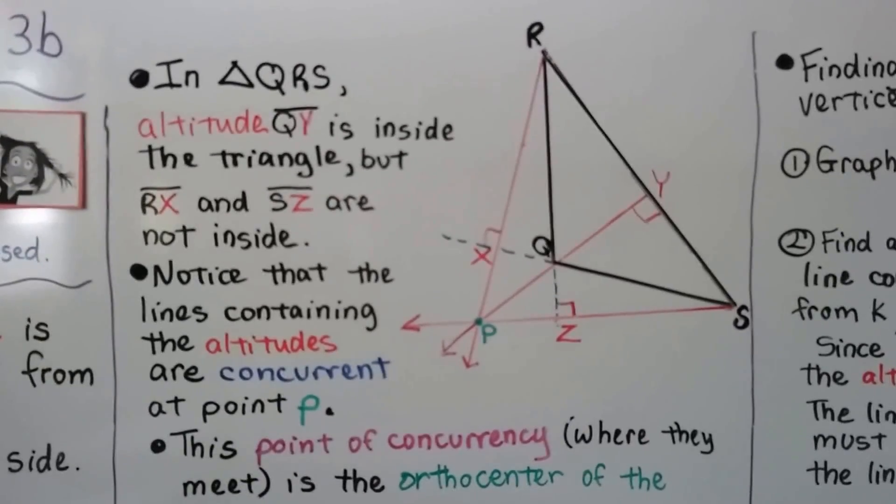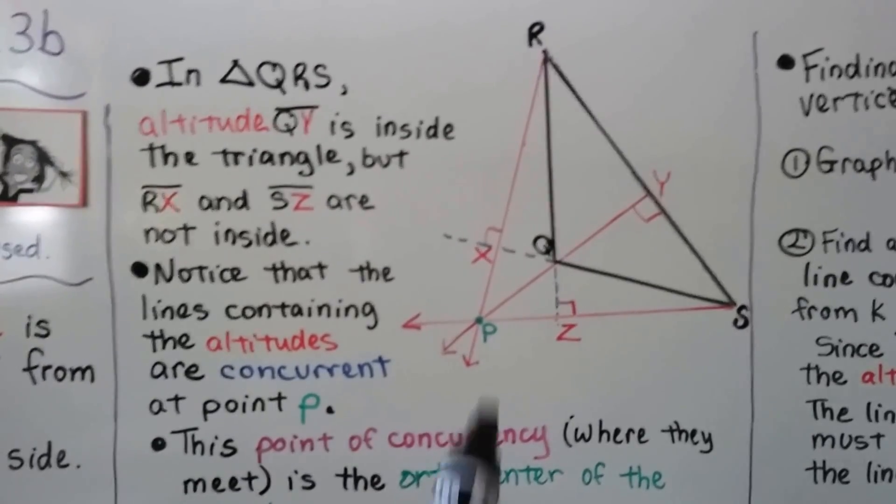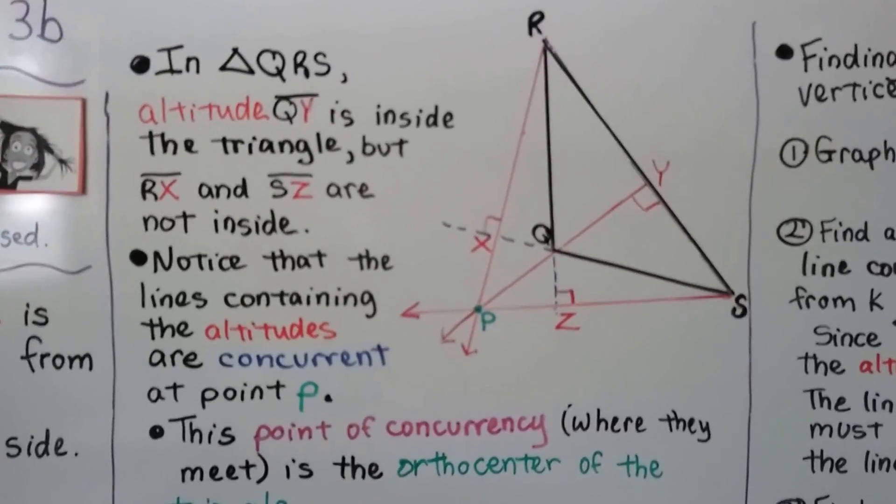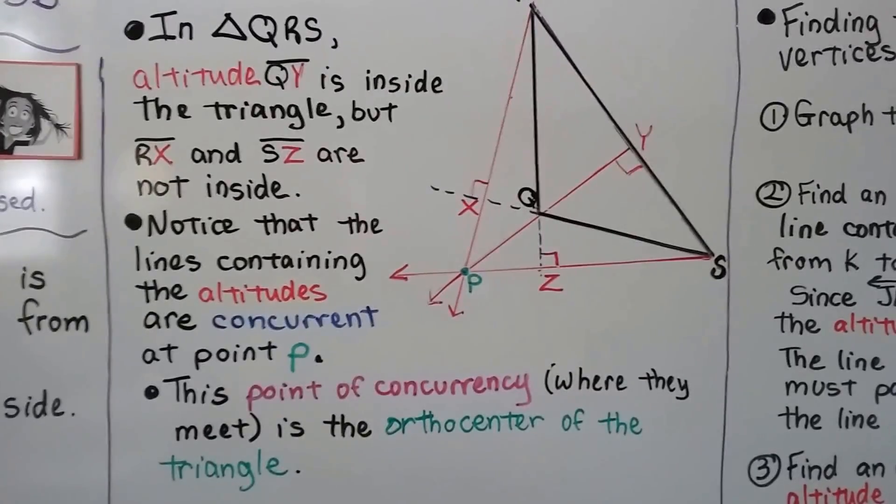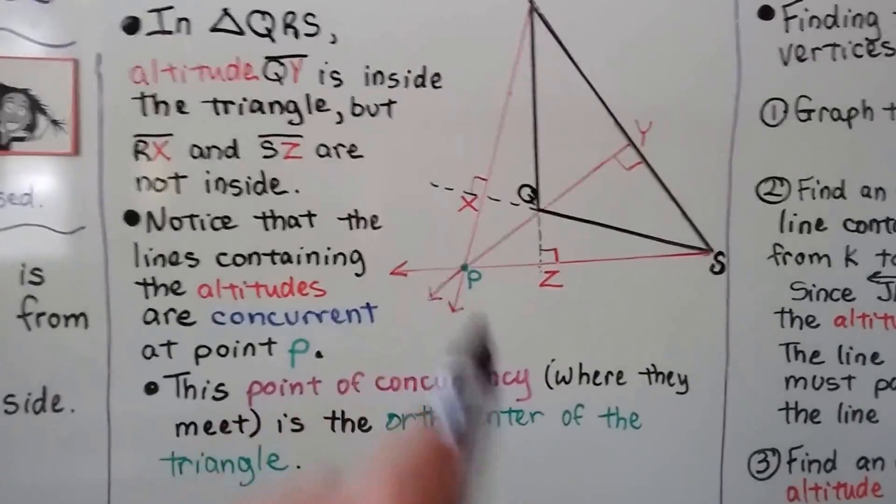And notice that the lines containing the altitudes are concurrent at point P. They meet up at point P. And this point of concurrency, where they meet, is the orthocenter of the triangle. So P is the orthocenter.